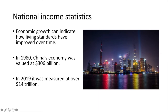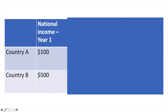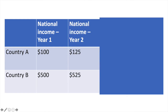National income statistics also help us compare the relative performance of economies. Let's look at two countries to see how national income can be used to compare them — country A and country B. In year 1, country A has a national income of $100. Country B is much larger with a national income of $500. In year 2, country A's national income rises to $125, whereas country B's economy rises to $525.